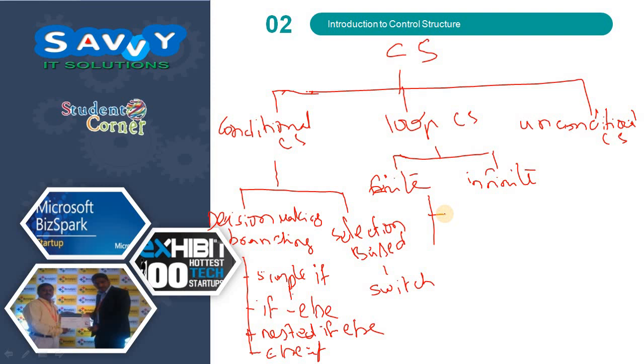These finite control structures are divided into two things. One is while, second one is do while. Infinite is for loop.